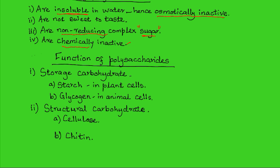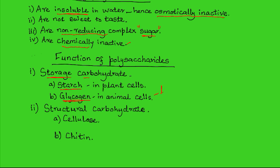The functions of polysaccharides depend on the type. There are two main categories. The first is storage carbohydrates: starch is the storage polysaccharide found in plant cells, while glycogen is found in animal cells. In mammals, glycogen is abundant in liver cells and muscle cells — the cells that use energy a lot and tend to have reserves of glycogen.